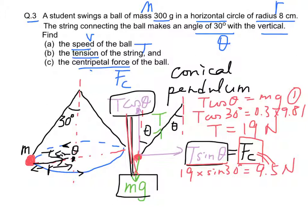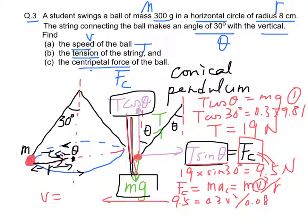By using Fc equal to m ac equal to m v squared over r, we can find v. We have 9.5 N equal to 0.3 times v squared over r equal to 0.08. Therefore, we have the speed of the ball equal to 1.59 meters per second.